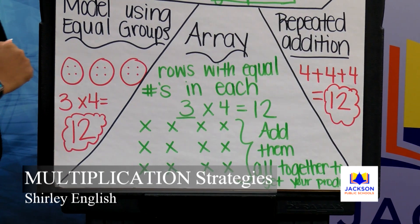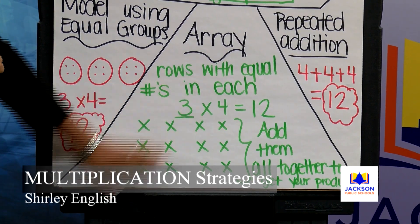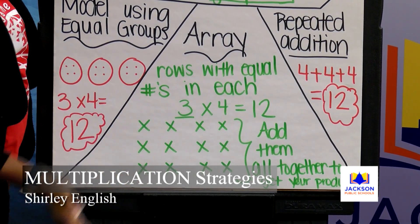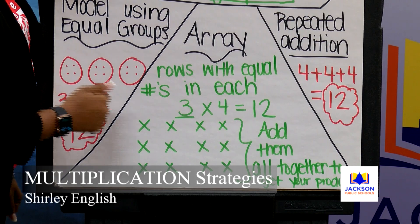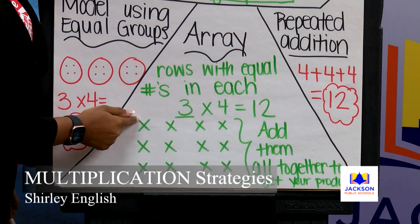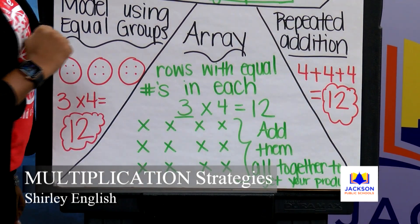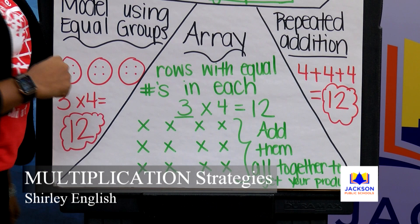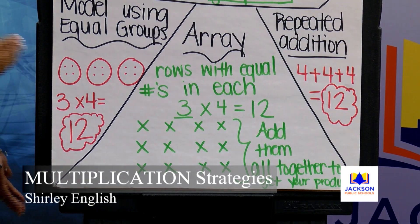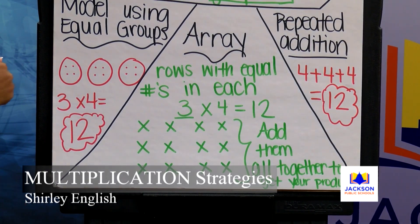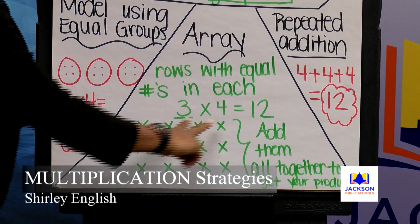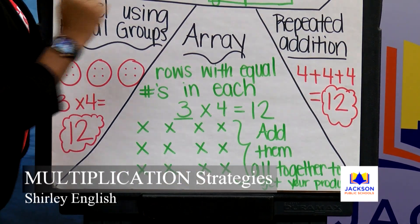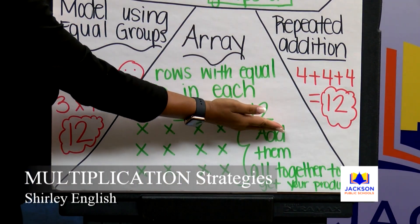Once I have created my model, I'm going to add them up. I can count by ones, I can count by twos, and some of us may be able to count by fours — whatever is easy for you to do. So counting by twos: two, four, six, eight, ten, twelve — and it gives me my product again.